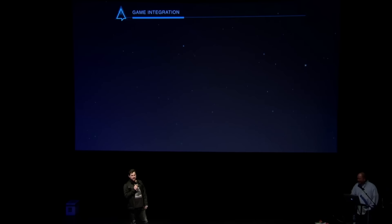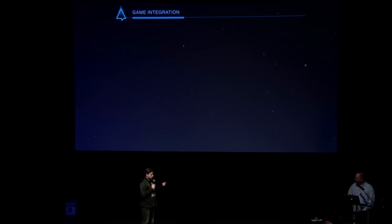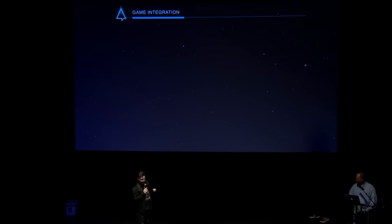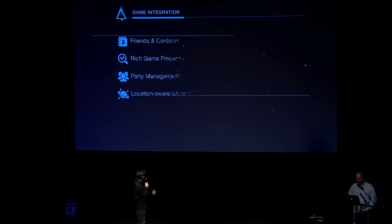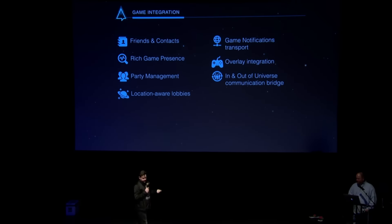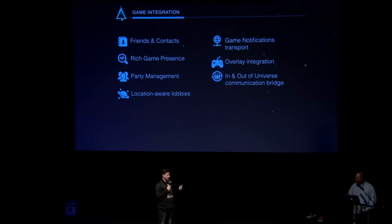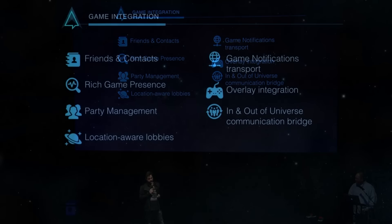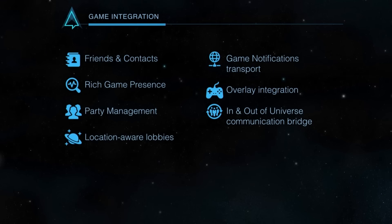In terms of game integration, this platform is similar to others that exist, though the advantage we have is that we can go deeper. Spatialized voice is one example. Friends and contacts will be standardized in Spectrum so you can manipulate them from there. We can have rich game presence — that means you're not just 'online,' you're on Port Olisar. That's a big difference. You'll be able to see statuses from the game straight in the Spectrum UI.